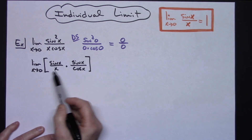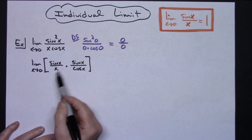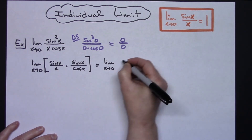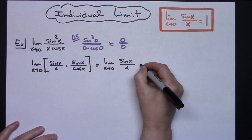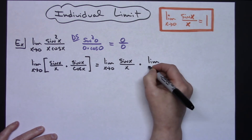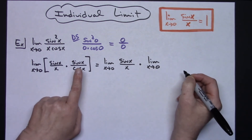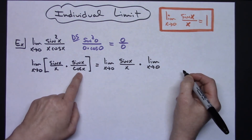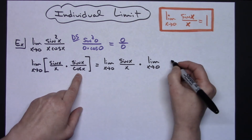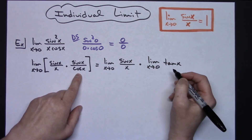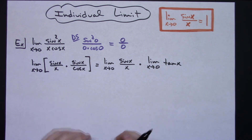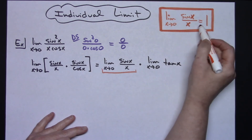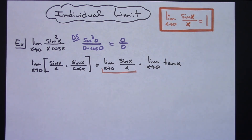Now I am multiplying two limits here, so I can take the limit individually of each one. I can do the limit as x approaches 0 of sine x over x, times the limit as x approaches 0 of sine over cosine. At this point it would probably be a good idea to do a substitution — we know that sine over cosine is going to be tangent x. Now because we know that the limit as x approaches 0 of sine x over x is 1, this part is 1 automatically.